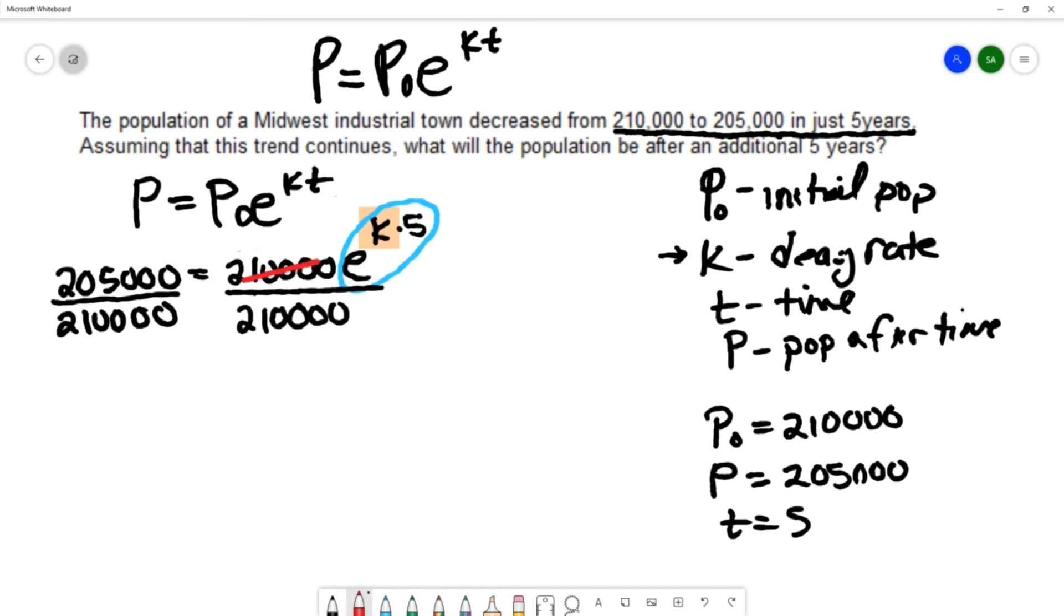These cancel out, and I'm left with e^(5k) on the right. On the left, these zeros cancel each other out, and I have 205 over 210. We could probably reduce that a little bit further. Both of them are divisible by 5. So 205 divided by 5 would be 41, and 210 divided by 5 would be 42.